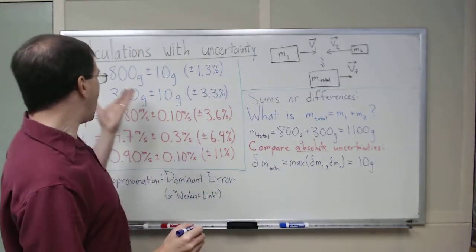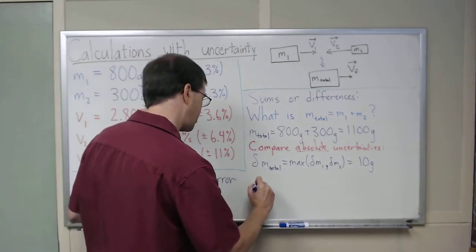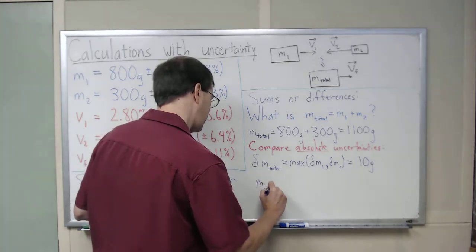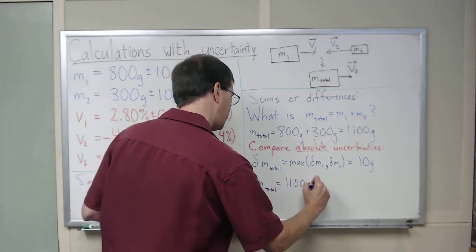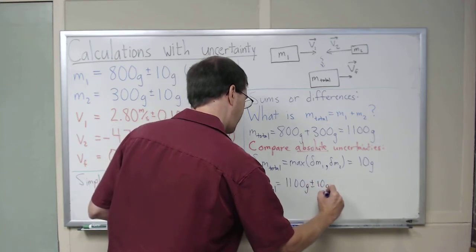So we would report our result then as m total equals 1100 grams plus or minus 10 grams. There we go, that's the answer. With dominant error, just compare the absolute uncertainties.